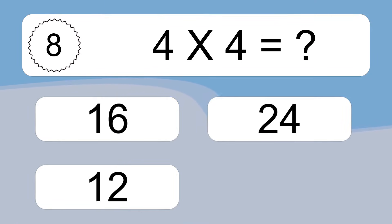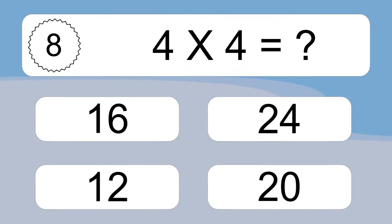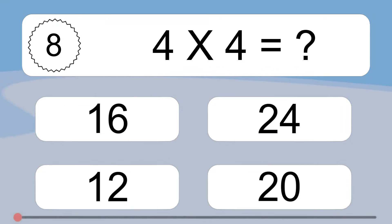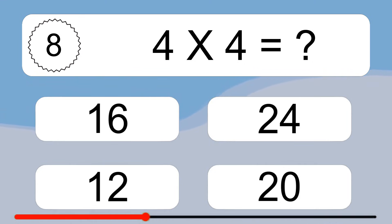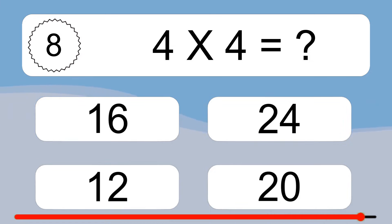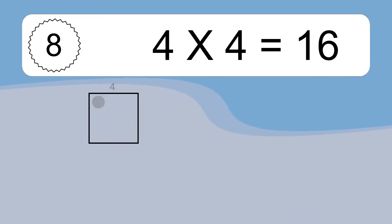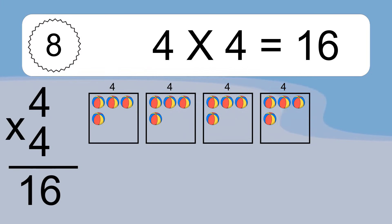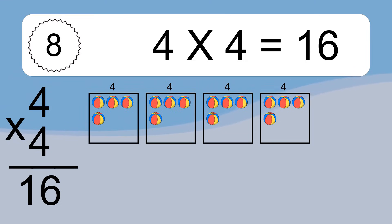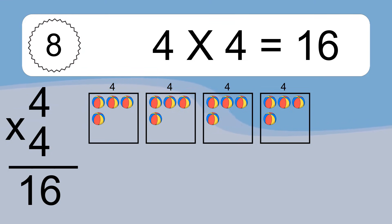4 times 4 equals what? 4 times 4 equals 16. We have 4 boxes, and each box has 4 colorful balls inside. If you count all the balls in all the boxes together, you will have 4 times 4 balls. This equals 16 balls.